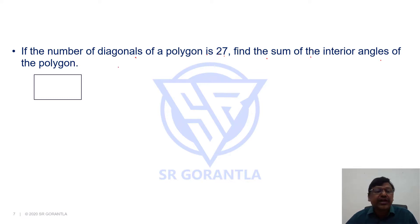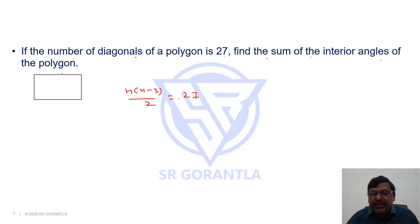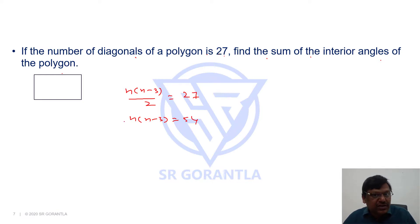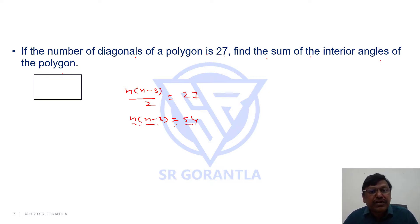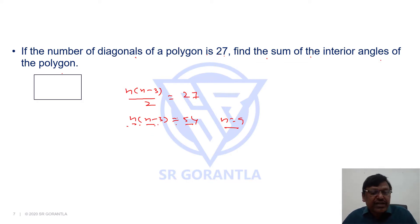Second question: if the number of diagonals of a polygon is 27, find the sum of interior angles. The number of diagonals formula is n(n − 3) / 2 = 27, so n(n − 3) = 54. Rather than solving a quadratic equation, we can guess from factors: we need two numbers differing by 3 whose product is 54. That gives us n = 9, since 9 × 6 = 54.